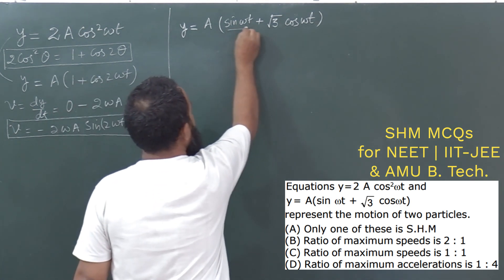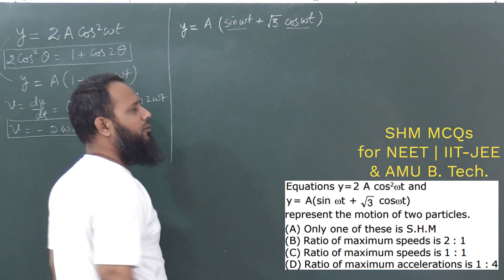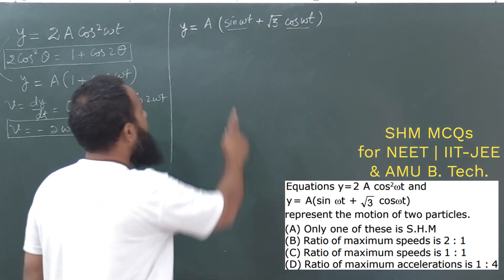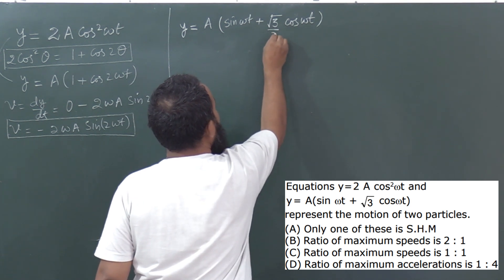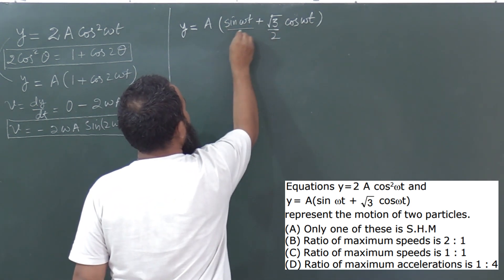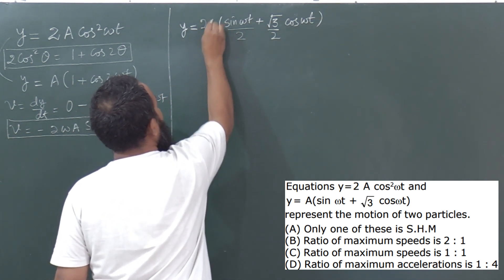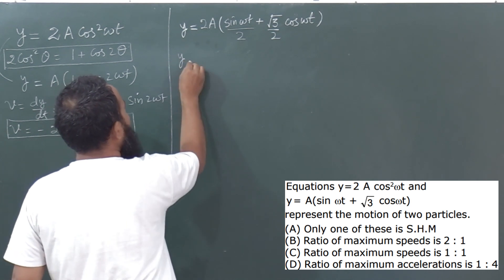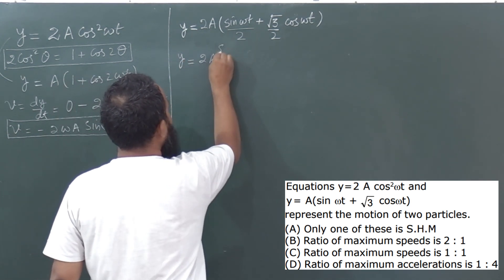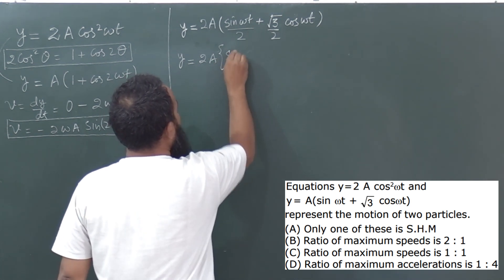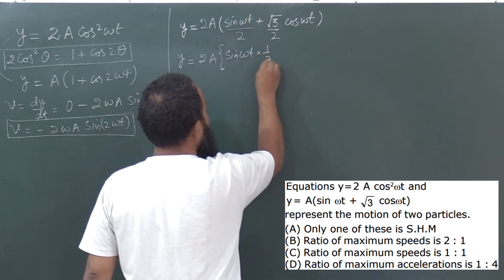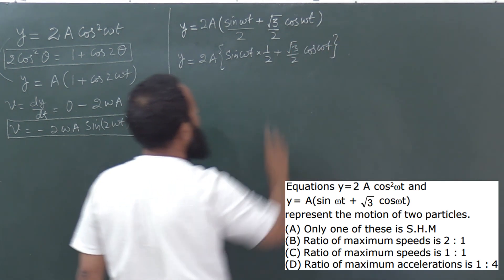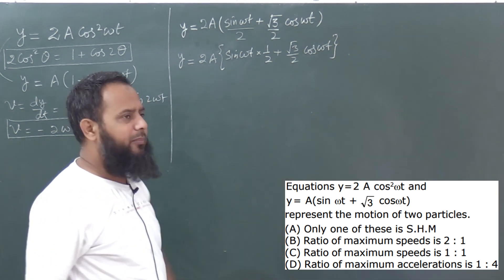अब दूसरी equation के लिए एक trick है — जब sin और cos दोनों साथ लिखे हों तो उन्हें एक single sinusoidal में convert करने की कोशिश करिए। sin और cos के साथ √3 आता है, जो कि 30-60 angles में आता है। तो यहाँ 2 multiply and divide करते हैं: y = 2a [sin(ωt)·(1/2) + cos(ωt)·(√3/2)].